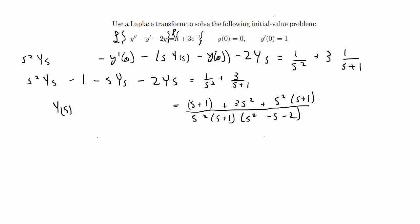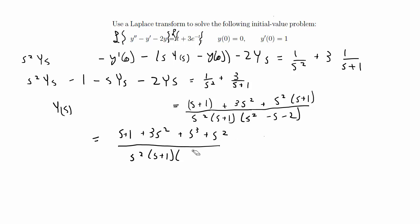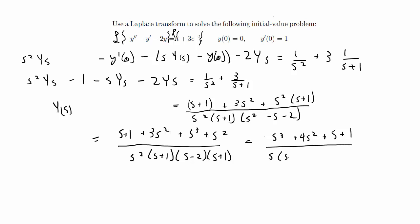Let me simplify the numerator: that's s plus 1 plus 3s squared plus s cubed plus s squared. The denominator is s squared times s plus 1, and then factoring gives s minus 2 times s plus 1. So simplifying further, we get s cubed plus 4s squared plus s plus 1 on the numerator, and on the denominator we have s, then s plus 1 squared, and then s minus 2.